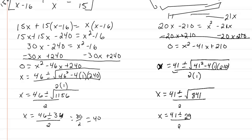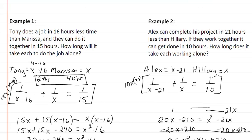Just like before, if we take 41 minus 29 we don't get enough, so we add: 41 plus 29 gives us 70 over 2, which is 35. Looking at our original variables, 35 minus 21 gives 14 hours for Alex, and Hillary takes 35 hours.